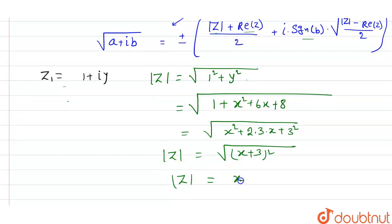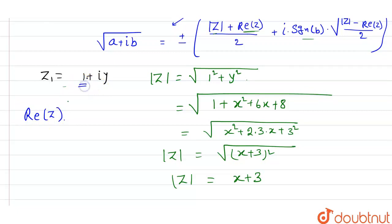Square root of (x+3)² gives mod of Z equal to x plus 3. The real part of Z is equal to 1, and the signum of b — here the signum function (sgn of b) applies.